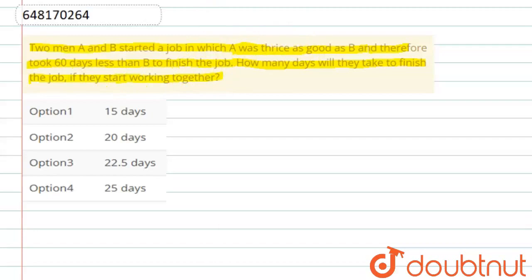We need to find out. First, we have to write A and B. Now, the question is that A was thrice as good as B. So what will be the efficiency? The efficiency of A and B: if A is thrice as good, the efficiency ratio is 3 to 1.